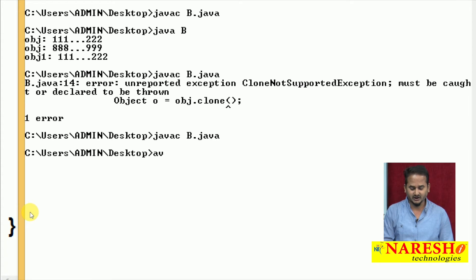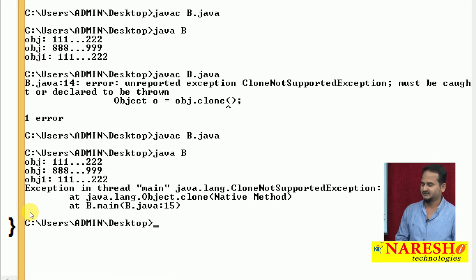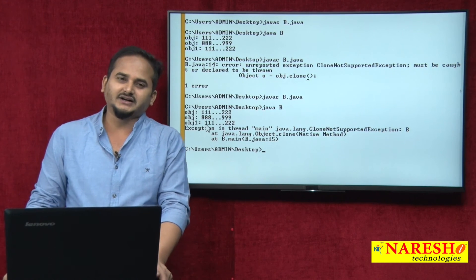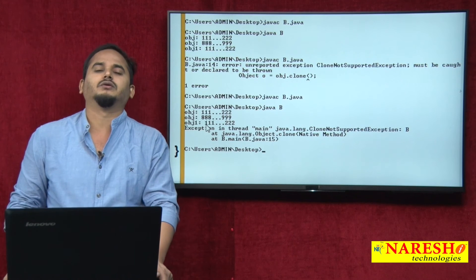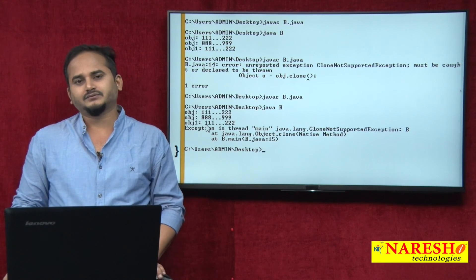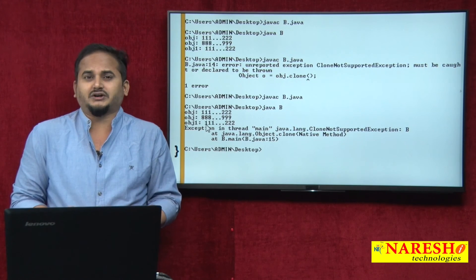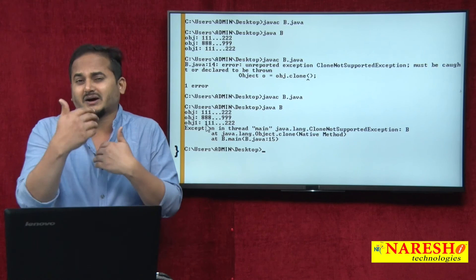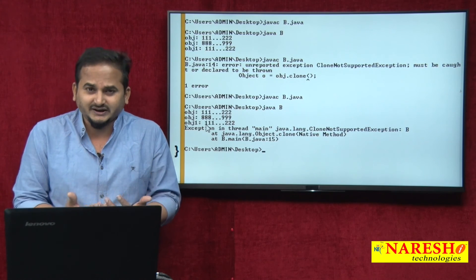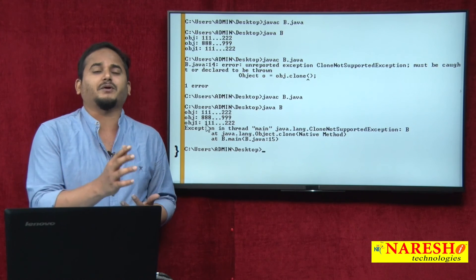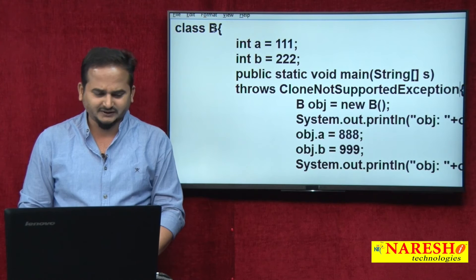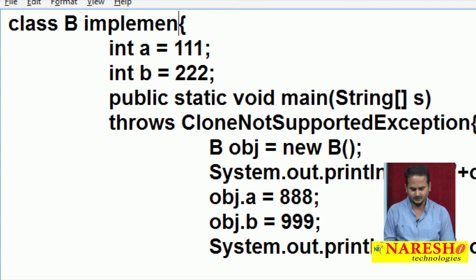Running: java b. Yes, what is that? CloneNotSupportedException again at runtime. Why again? Because JVM is not providing permission to participate in cloning for every object. If JVM is to provide permission, the object must and should implement the Cloneable interface. Only then will JVM provide the permissions to participate in cloning. So implementing Cloneable — class B implements Cloneable.